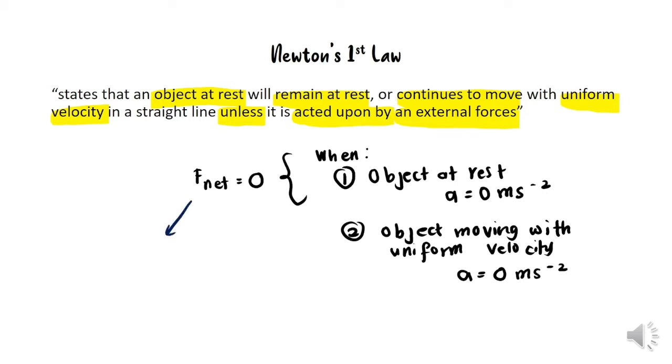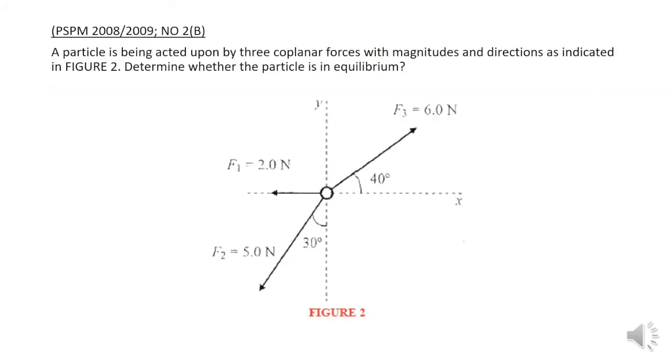Since the resultant force or net force equals zero, this means Fx and Fy also equal zero. Let's start by solving the first question, PSPM 2008-2009, where we have three coplanar forces with magnitude and direction shown in Figure 2.